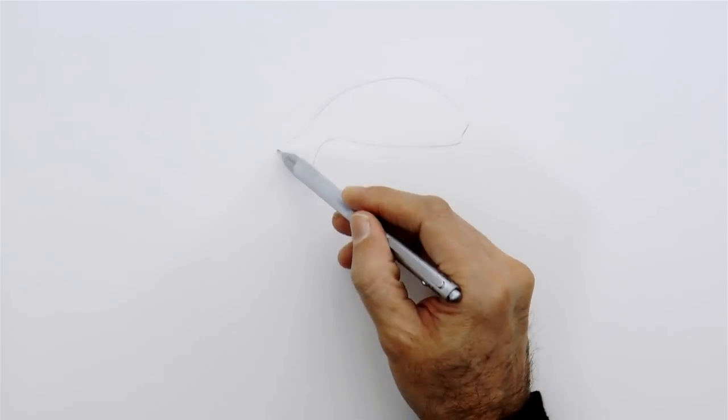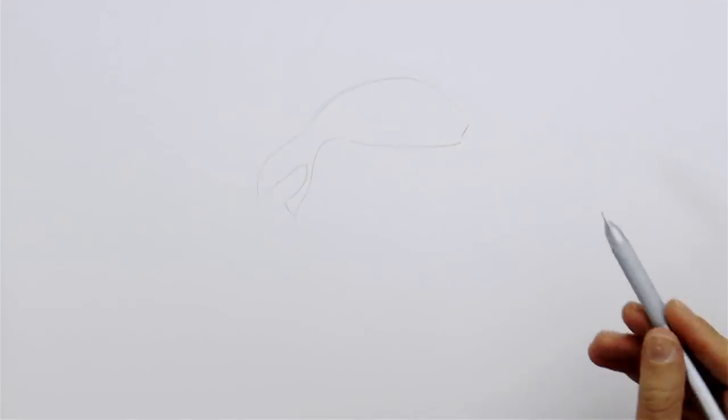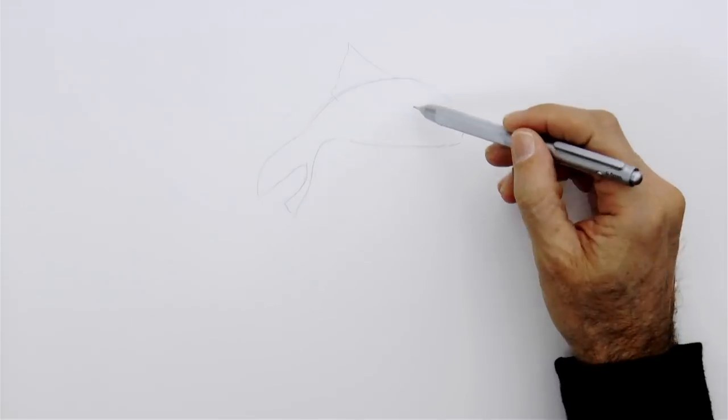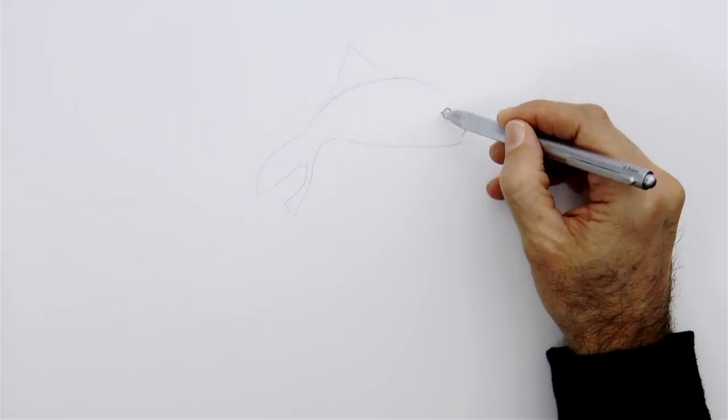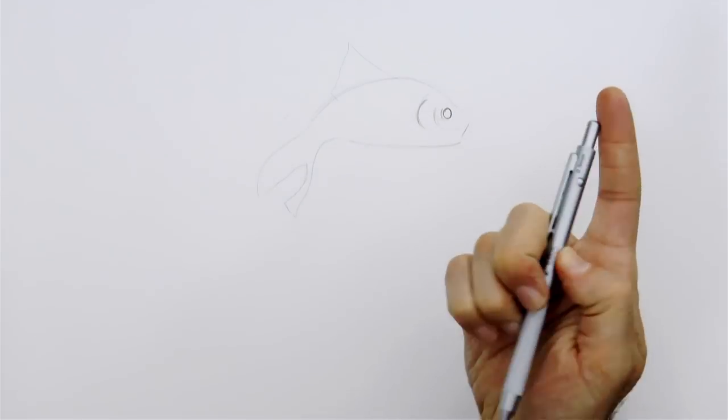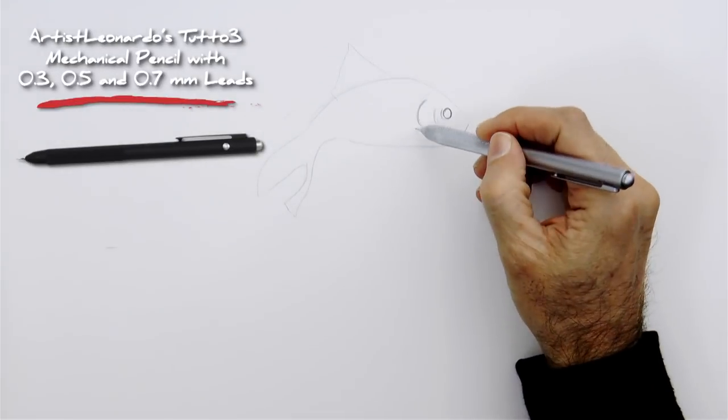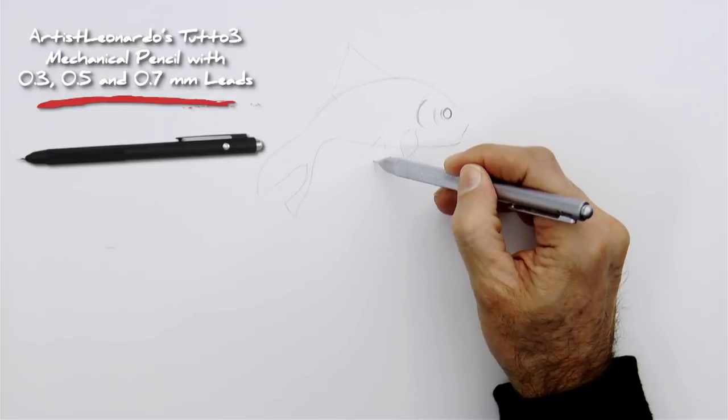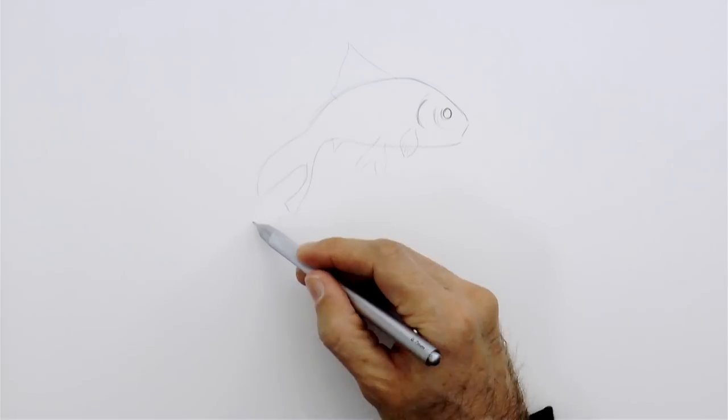First, we draw the fish as normally, flat. The body with the fins, the tail, the eye, the gills from where they breathe. I switch lead in my Tutu3 mechanical pencil for a harder one for the rest of the sketch.